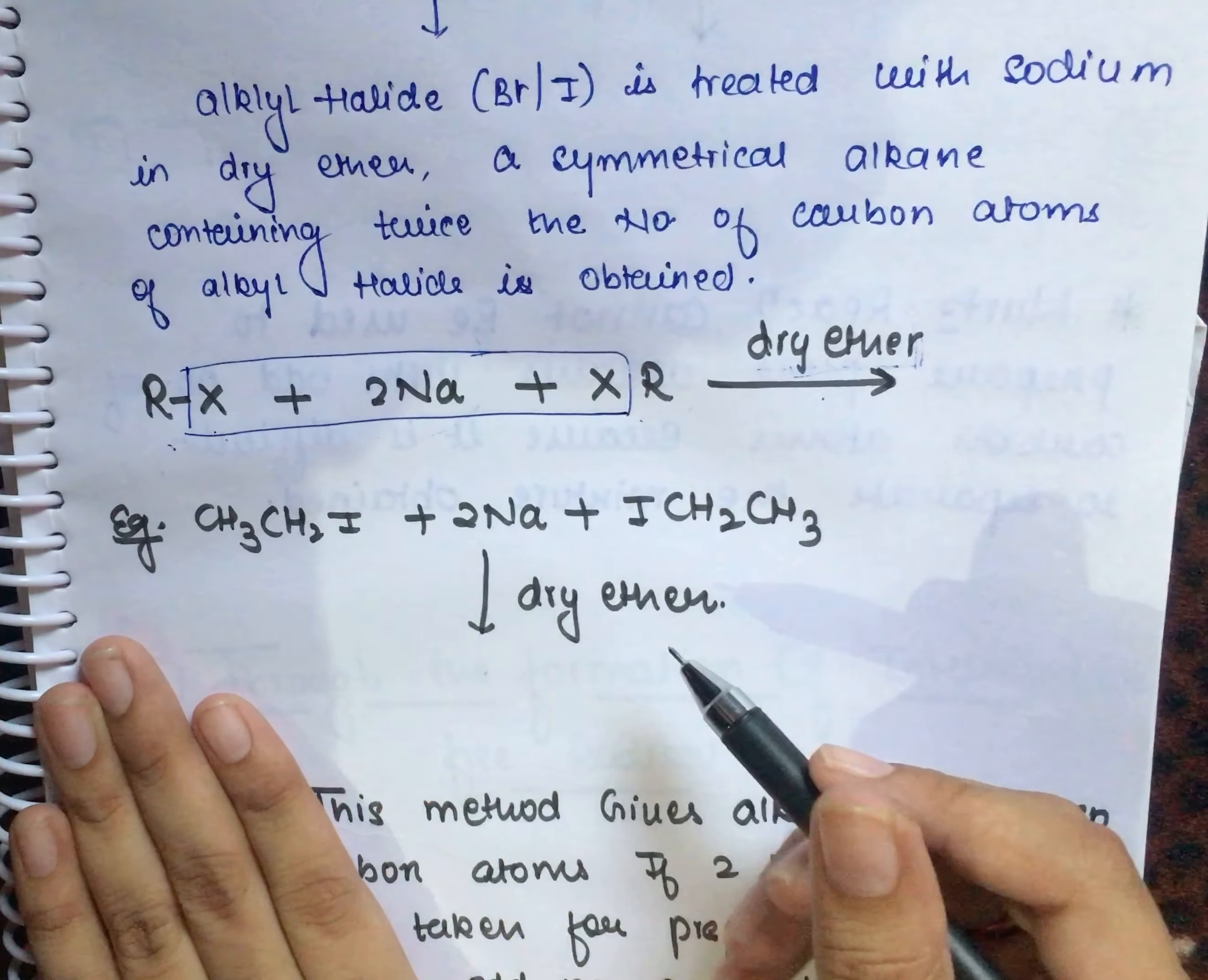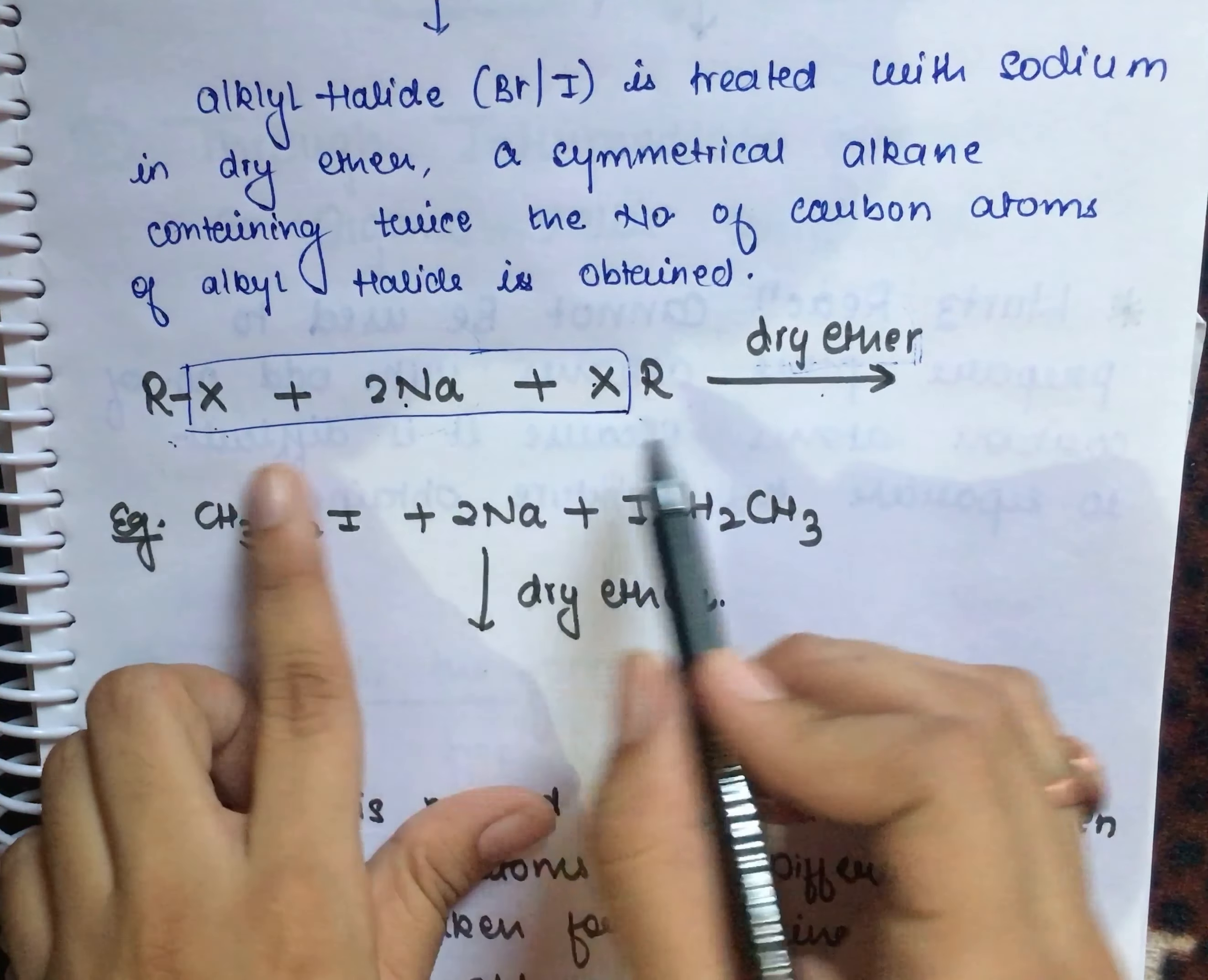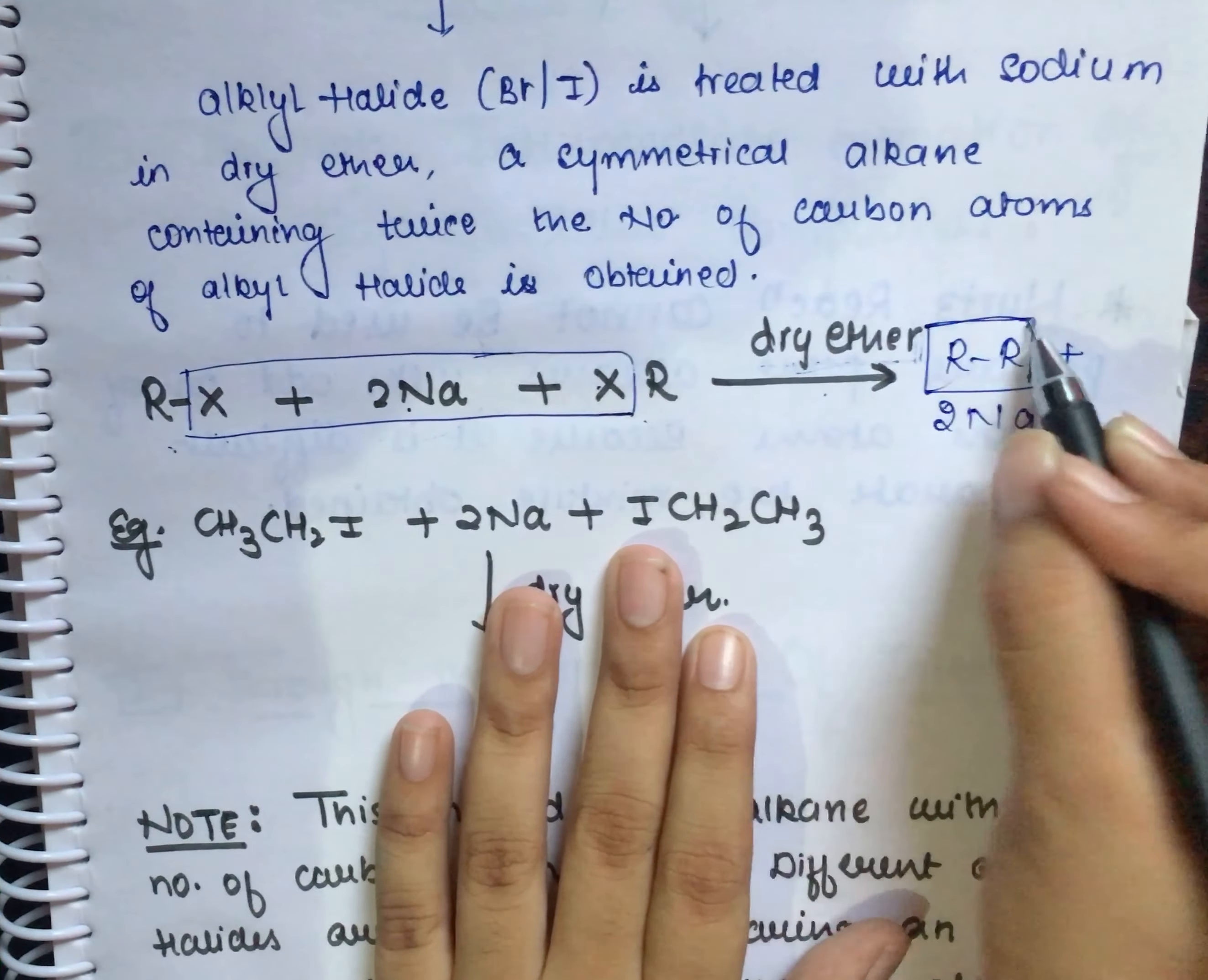This is the easy way. You can see that two moles of NaX form. This is our halide group - you have to remove this. So what will be left? R-R plus 2NaX. R-R becomes the alkane.